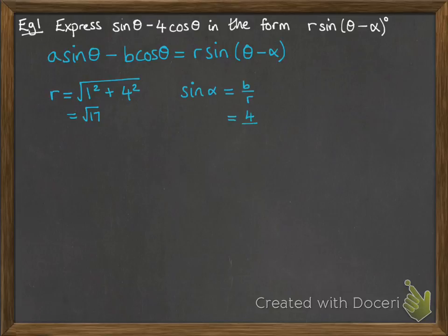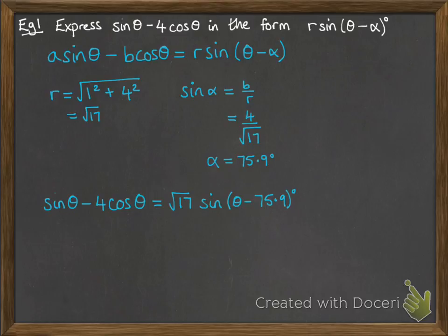To work out alpha, we use the fact that sine alpha equals b over r, which is 4 over root 17. We also could have used the fact that cos alpha would have been 1 over root 17 to work it out that way as well. So now alpha is 75.9 degrees. Therefore, we can rewrite it as root 17 sine of theta minus 75.9 degrees.